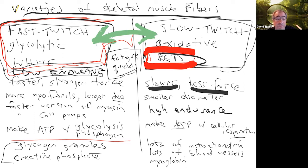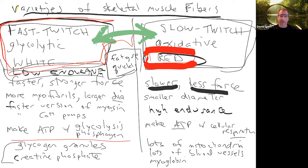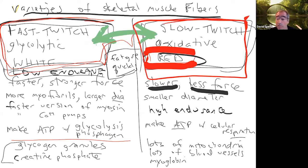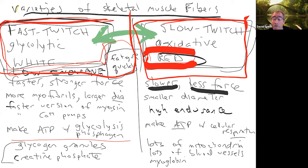Depending on what kind of activities you do, one or the other fiber type will be developed more. You're genetically predetermined in what kind of ratio and how many of these different fibers you have. But depending on how you train — lots of low weights high reps will develop more slow twitch; low reps high weights optimizes fast twitch fibers. Your distribution of different fibers is kind of genetically determined, so some people no matter how they train are just going to end up being better sprinters or better distance runners.